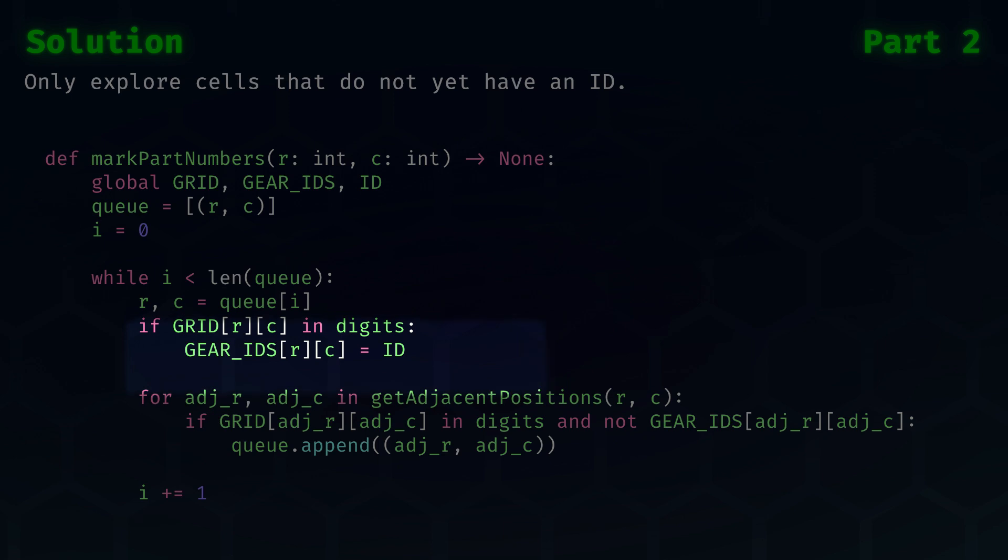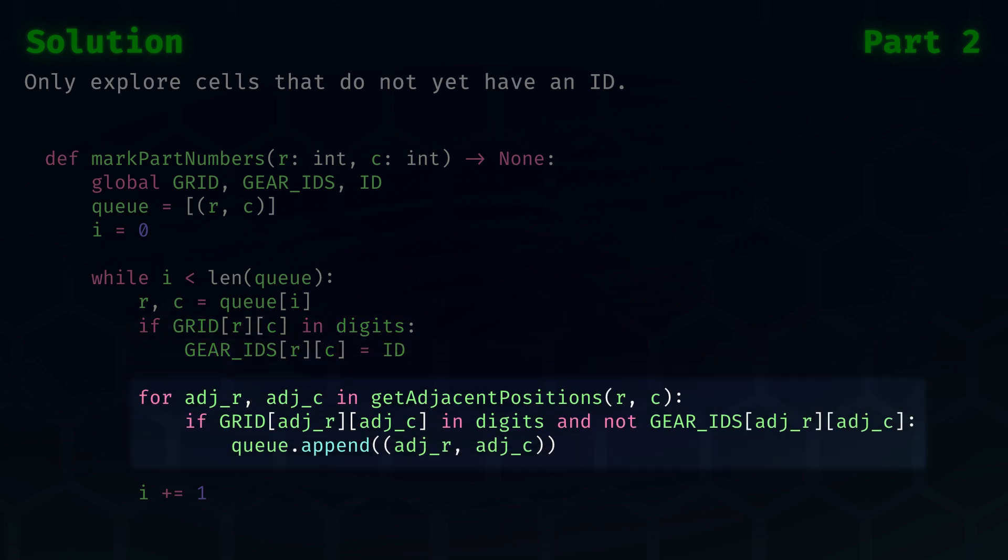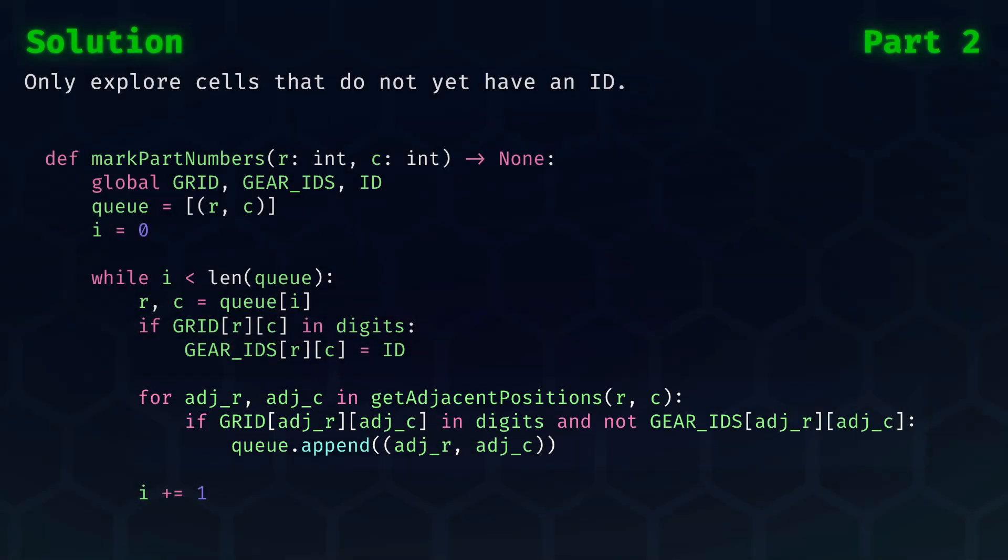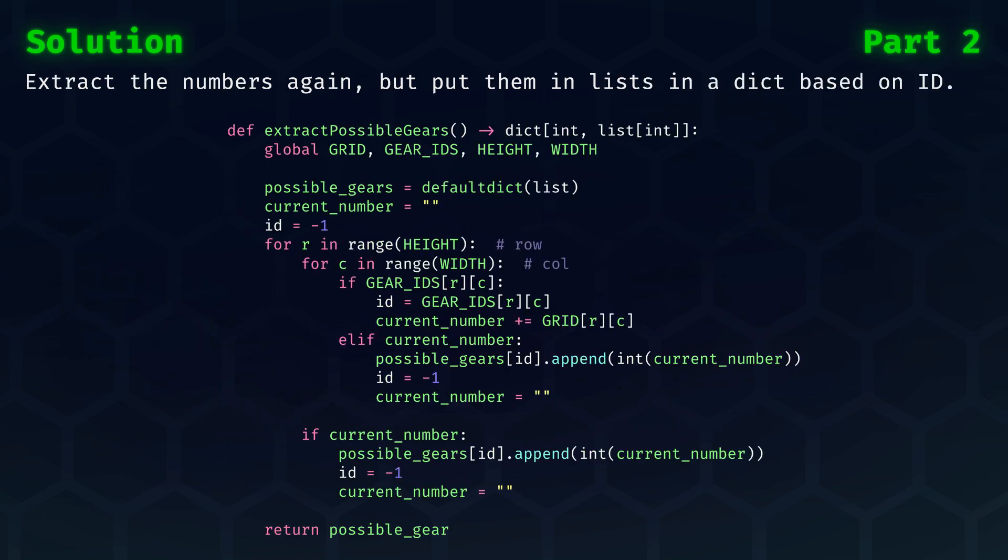The flood filling algorithm is still largely the same, but we need to mark cells with the global ID, which we keep incrementing outside of this function. During exploration, we of course only have to add positions to the queue that do not yet have a gear ID.